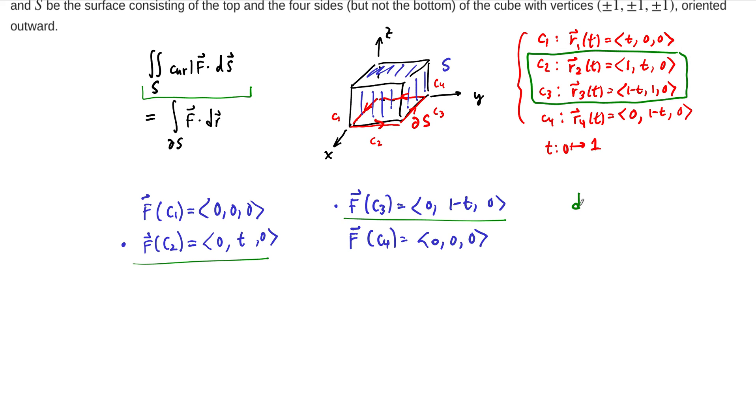We're going to need dr2 and dr3. dr2 is r2 dot times dt. And r2 dot is going to just be the vector 0, 1, 0 dt. And then similarly, dr3 is r3 dot times dt. This one's going to be negative 1, 0, 0 dt. Just take the derivative with respect to t and then work it out.